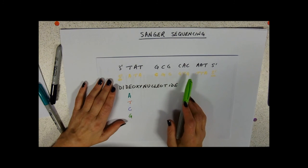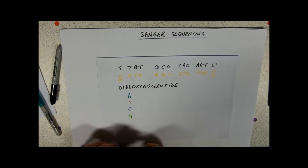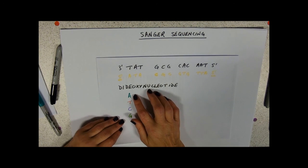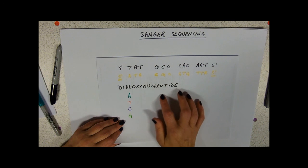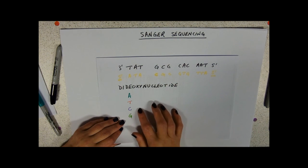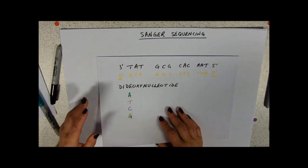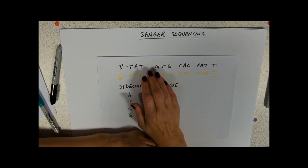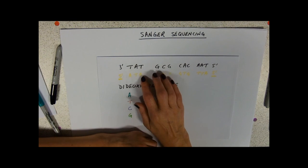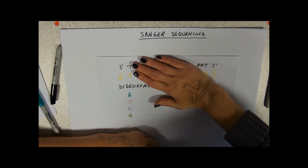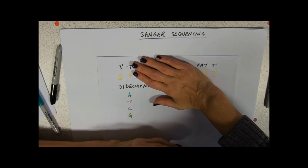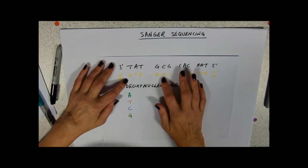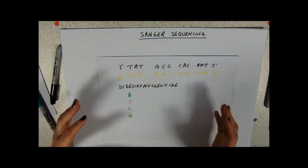So we could make A dideoxynucleotides by removing bits off an A, we could make T dideoxynucleotides, we can make C dideoxynucleotides, and we can make G dideoxynucleotides. And what that will do is if the base that attaches to the template strand is an altered one, it will stop the DNA replication at that point.